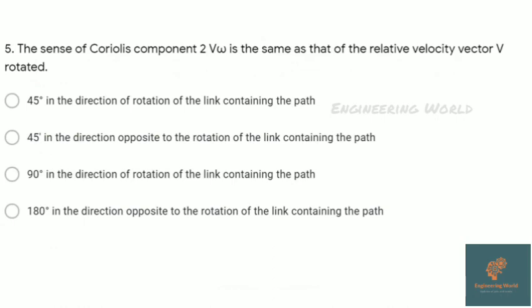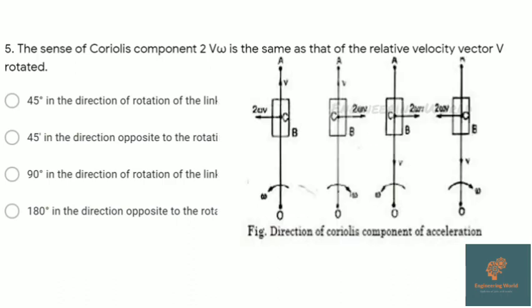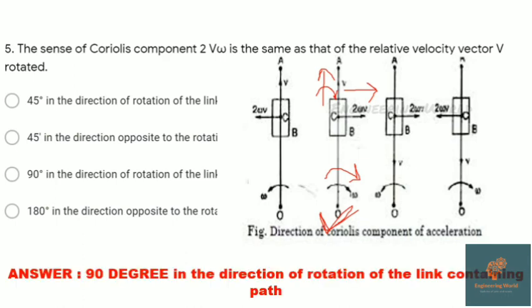Next question: the sense of Coriolis component 2vω is the same as that of relative velocity vector v rotated? Here are the various directions of Coriolis component. We have to rotate velocity vector v 90 degrees in the direction of rotation of the link containing the path. I will explain one example here. Look at the second one.